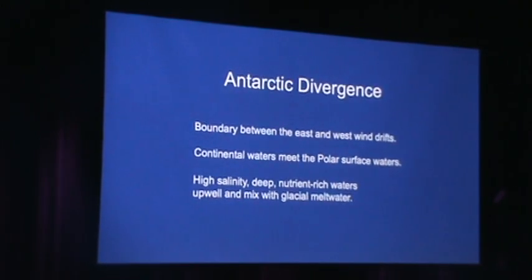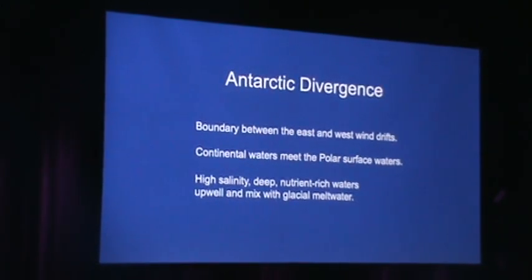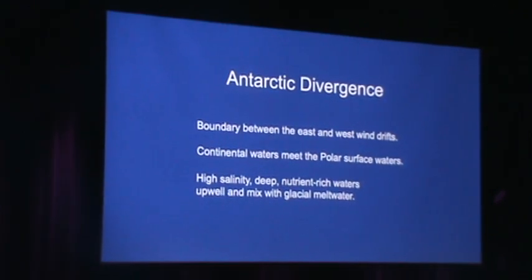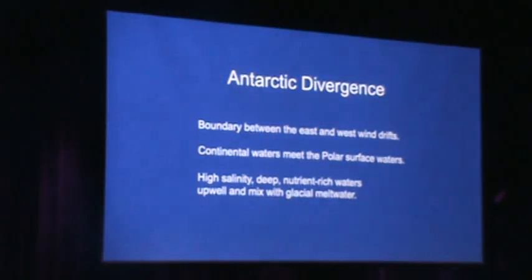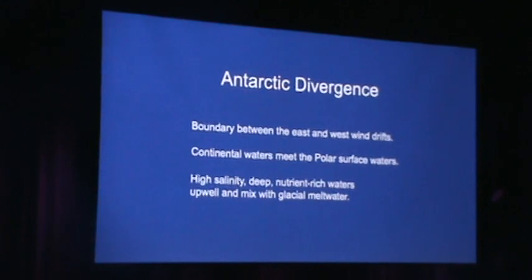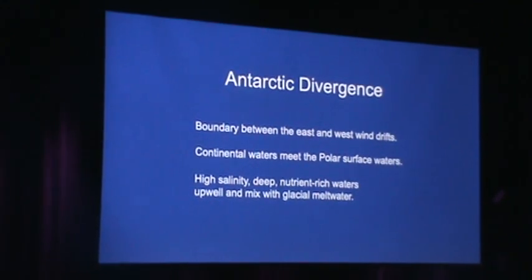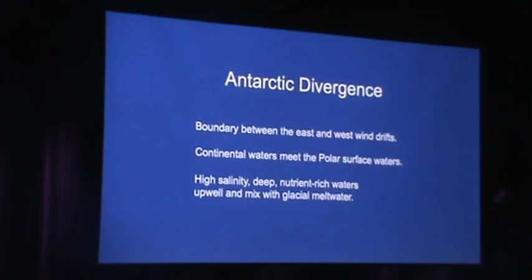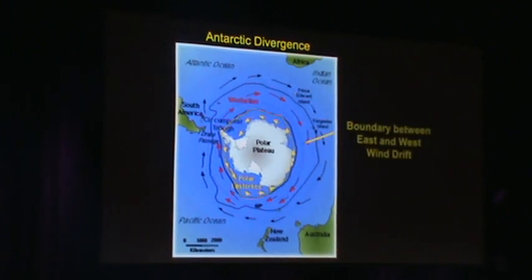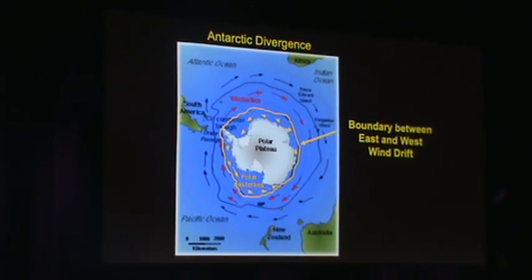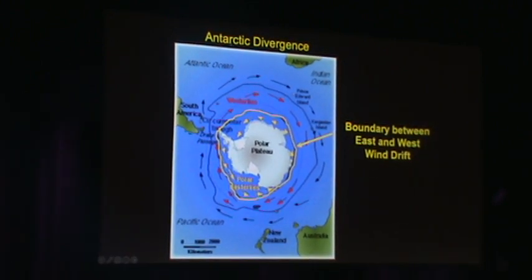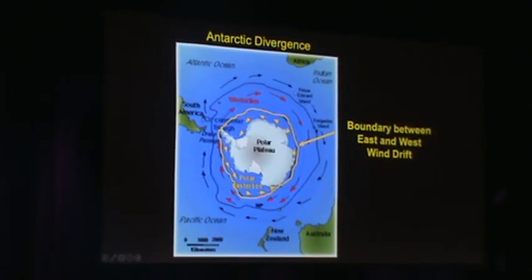Those nutrient-rich waters mix with the glacial melt waters from the Antarctic ice sheet — in this case the West Antarctic ice sheet. The Antarctic is sometimes considered a single ice sheet and sometimes as two ice sheets — East and West — divided by the Trans-Antarctic Mountains.